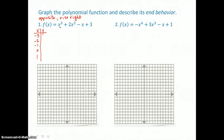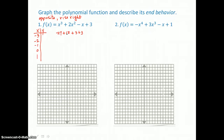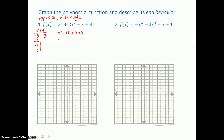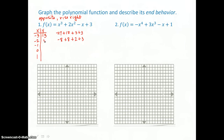When I put negative 3 in for x: negative 3 cubed is negative 27; negative 3 squared is 9, and 9 times 2 is 18; minus a negative 3 is plus 3, plus 3. So 6 plus 18 is 24, and 24 plus negative 27 is negative 3 for a y value. Negative 2 in for x: negative 2 cubed is negative 8; negative 2 squared is 4, and 4 times 2 is positive 8; minus a negative 2 is plus 2, plus 3. Negative 8 and positive 8 sum to 0, so my y value is 5.